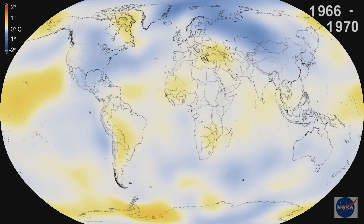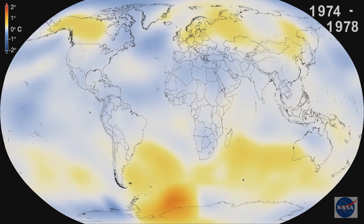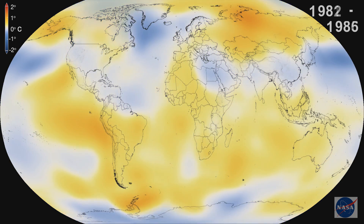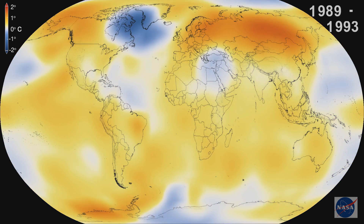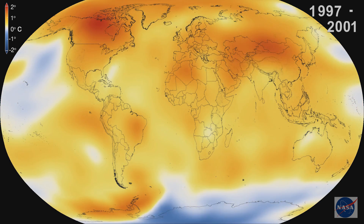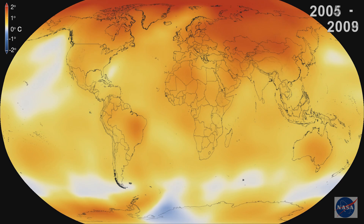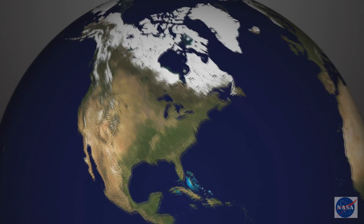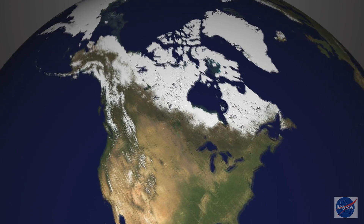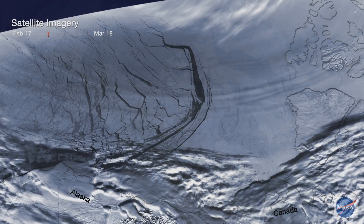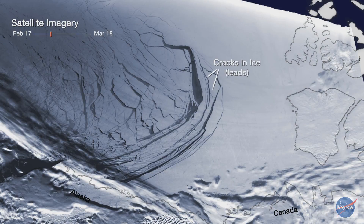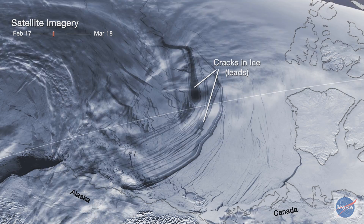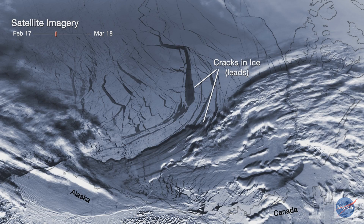Other than noticing a lot more red than blue in this succession of years, you also probably notice the darker reds at the top and bottom of the maps, that is closer to the poles. On average, the higher latitudes near the poles are warming much faster than the lower latitudes where more people live.